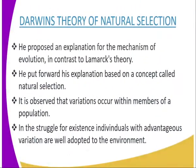Now we are going to look at our second scientist, Charles Darwin. We are going to look at Darwin's theory of natural selection. In his book on the origin of species, he proposed an explanation for the mechanism of evolution in contrast to Lamarck's theory. Darwin put forward his explanation based on a concept called natural selection.